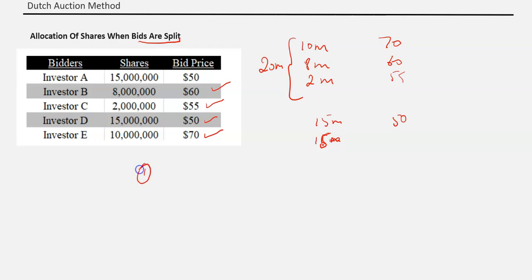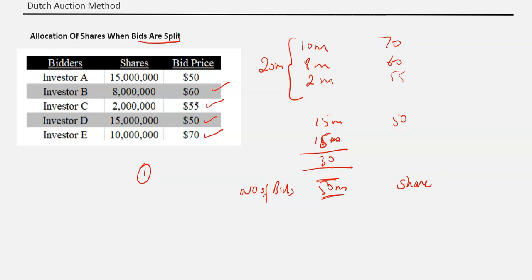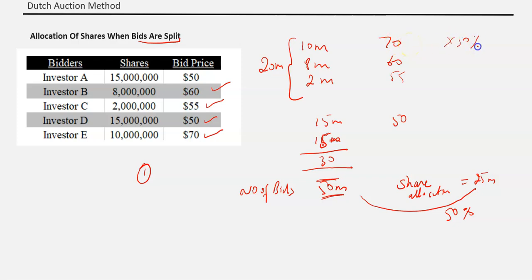Method one: take the total of all the shares bid — the total bids are 50 million. The number of shares you want to allocate is 25 million. So the allocation ratio is 50 percent. Every participant, whether they participated at a higher or lower price, gets 50 percent of their bid. So one gets 5 million, another gets 4 million, another gets 1 million, and the two at the last price each get 7.5 million — total 25 million. That is method one.